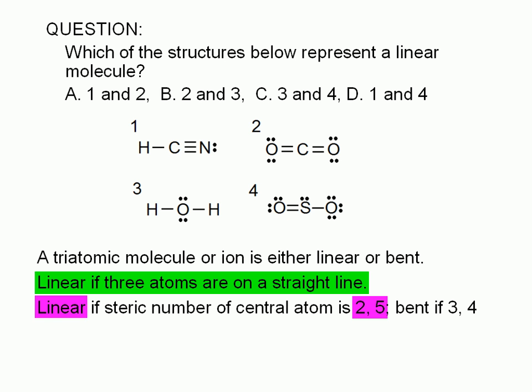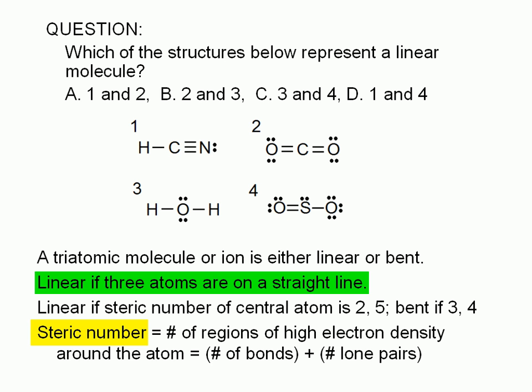If the steric number is 2 or 5, it is linear. If the steric number is 3 or 4, then it is bent. The steric number of an atom is the number of regions of high electron density around the atom — it's the total number of bonds and lone pairs. Each single bond counts as one region, each lone pair also counts as one region, a double bond counts as just one region as well, and so does a triple bond.